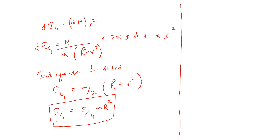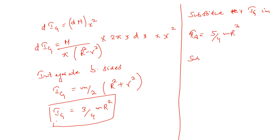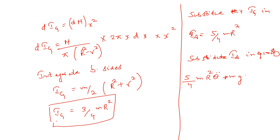Substituting I_G into the parallel axis theorem: I_A = I_G + m·r² = (3/4)·m·r² + m·r² = (5/4)·m·r². Substituting this into equation 1: (5/4)·m·r²·θ̈ + mg·(r/√2)·θ = 0.